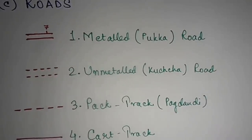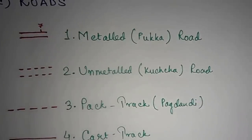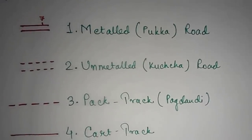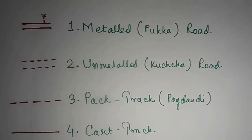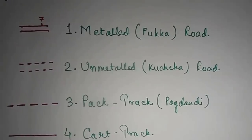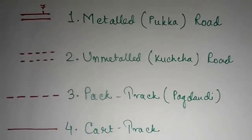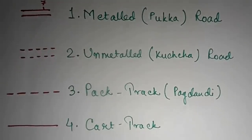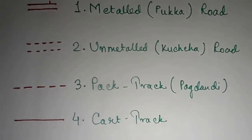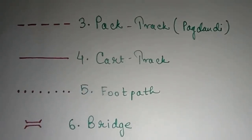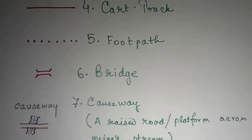We move on to roads. Number one is a metal road — a pakka road which is motorable in all seasons, and its presence shows the area is well developed. You may also see a milestone marked with a number on it. Number two is unmetalled or kaccha roads, indicating the place is undeveloped. Then we have pack track or pakdandi, represented by a broken line — a path made by constant use by men or animals. Number four is cart track, a little broader than a pack track, used by bullock carts and motorable in dry season only. Then we have red dots representing a footpath.